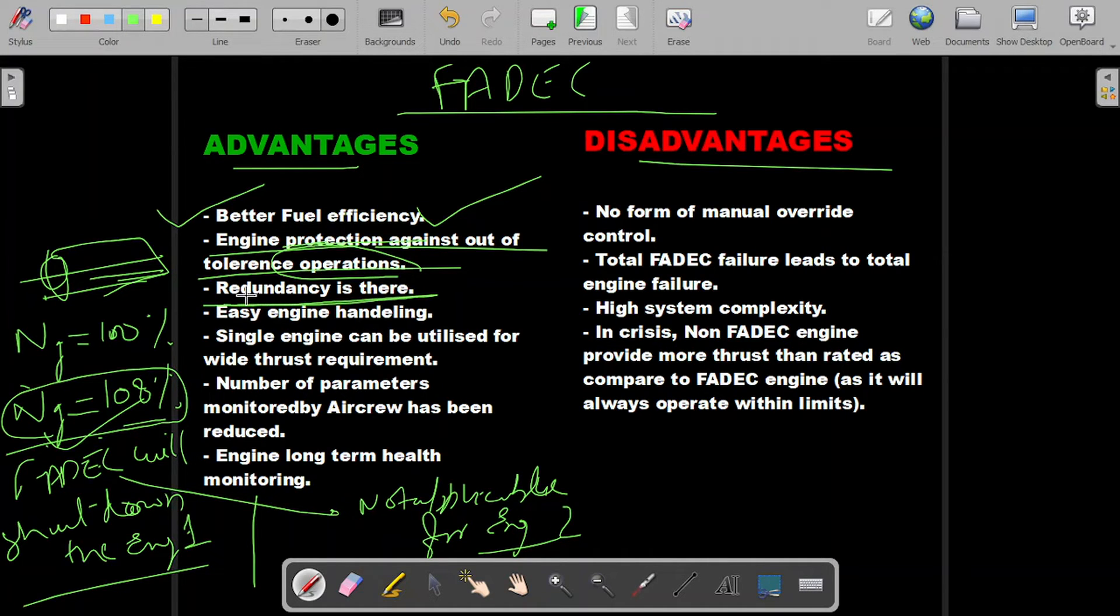As we are heavily relying on automation, there are chances that if this kind of system fails, as I've told, there is no manual override. Failure of FADEC leads to failure of engine. That means redundancy should be there. Definitely in all modern aircraft, if FADEC system is there, they're always there in two channels or two FADECs with a crosstalk feature. That means each FADEC will know what is happening with both the engines.